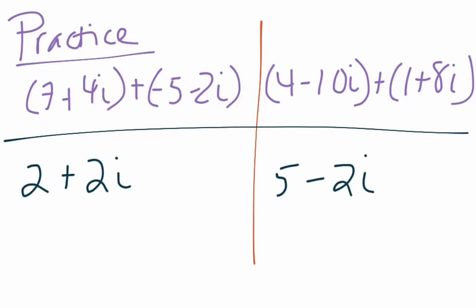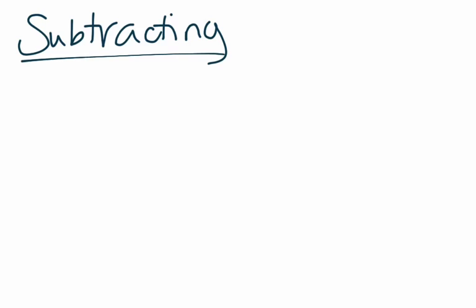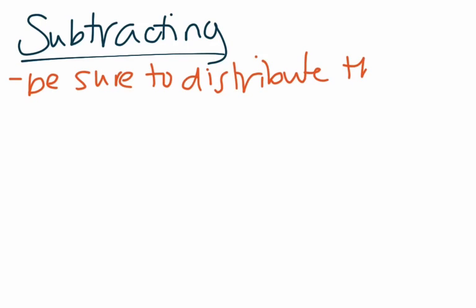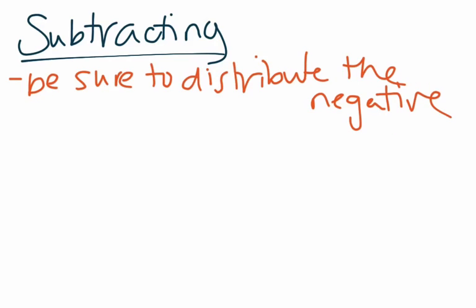Now let's go on to subtraction — the second easiest thing to do, and it's exactly the same as adding since subtracting just means adding the opposite. You combine the real parts and then combine the imaginary parts. There's only one caution: be sure to distribute the negative — that is, your subtraction sign — through the second set of parentheses. When adding, you don't really need to show the step of removing the parentheses, but when subtracting you do, because we're all very prone to making sign errors there.